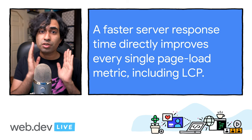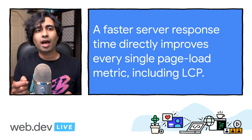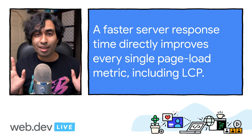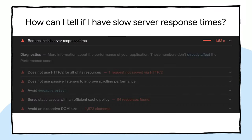Slow server response times directly impact LCP. The longer it takes a browser to receive content from the server, the longer it takes to render anything on screen — a faster server improves every page load metric including LCP. Lighthouse has an audit called 'Reduce Initial Server Response Time' that's a good hint to diagnose backend causes. When optimizing server response times, there's plenty to do around DNS, pre-connects, and loading priority — including techniques like link rel preload and server push.